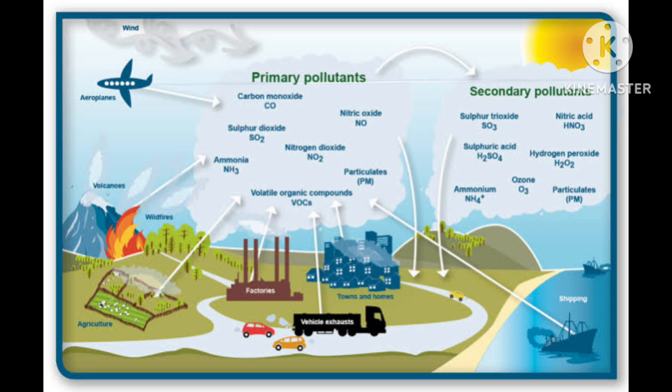Dust is composed of fine solid particles over one micrometer in diameter. It is produced during crushing, grinding, and attrition of solid materials. Examples include sand from sand blasting, sawdust from wood works, pulverized coal, cement and fly ash.